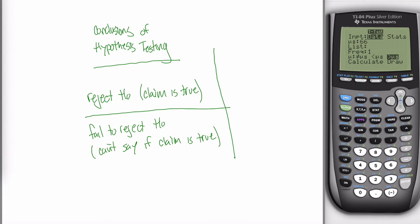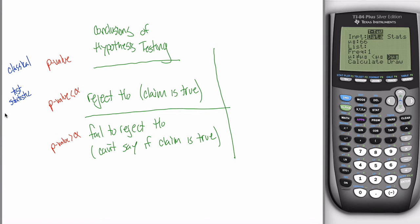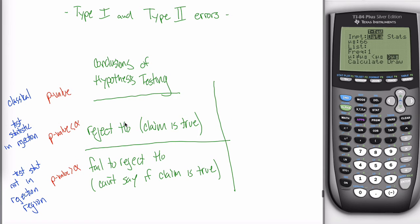It's worth pointing out how you get there. Using the p-value method: if your p-value is less than alpha, you reject the null hypothesis; if your p-value is greater than alpha, you fail to reject the null hypothesis. Using the classical method: if the test statistic falls in the rejection region, you reject the null; if it does not fall in the rejection region, you fail to reject. That's just review — for type 1 and type 2 errors, we're focused on the two conclusions: reject the null, or don't reject the null.